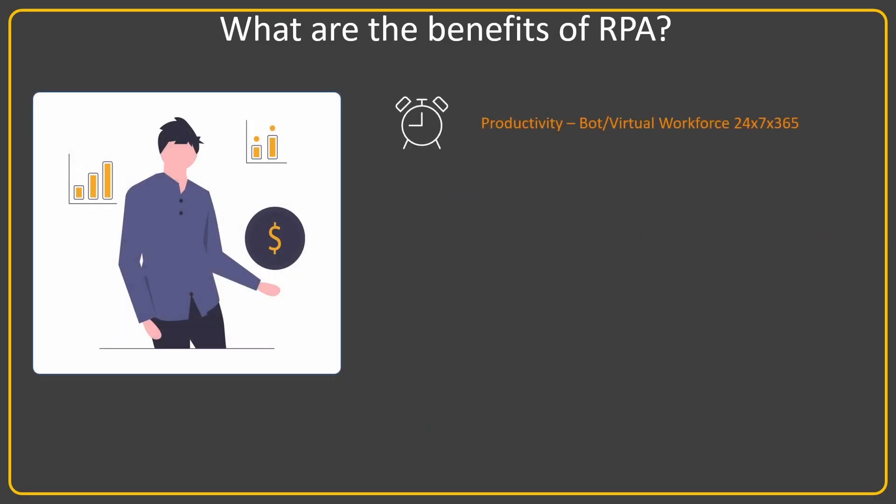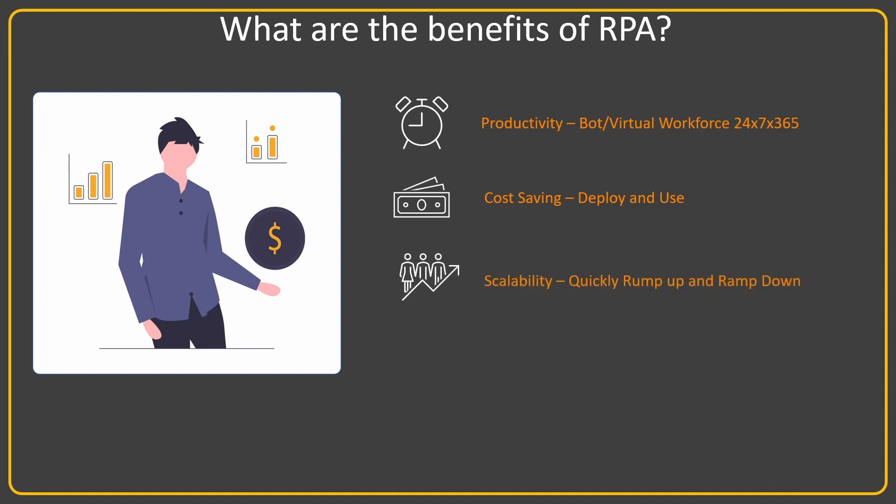Some of the benefits of RPA are productivity — a bot or a program requires just a computer and it runs 24/7, 365 days. It doesn't take any breaks, it doesn't need to go offline, it doesn't get sick, so it keeps on executing. High productivity can be achieved and this constant running also reduces costs. Once you deploy it you don't need to put a human to it — it's also called a digital workforce. It saves cost because you don't need to hire people, train them, ramp them up, or ramp them down, which is a very costly process.